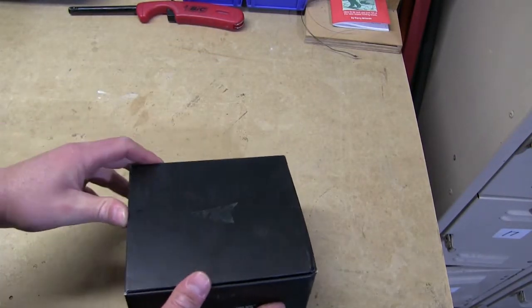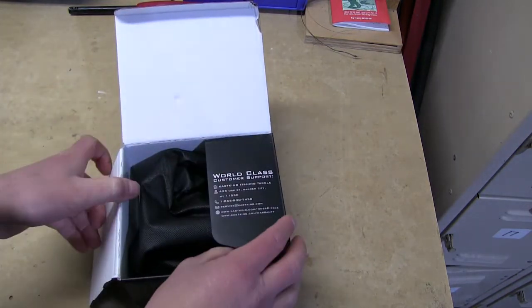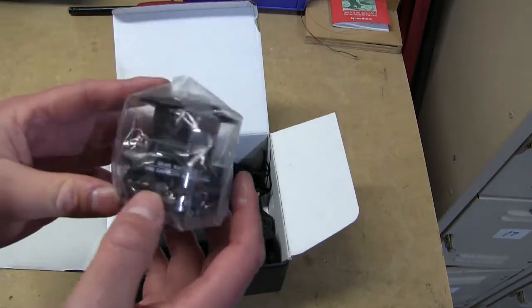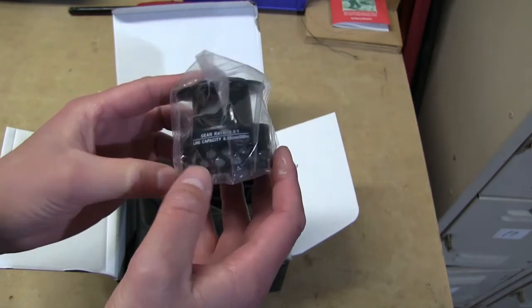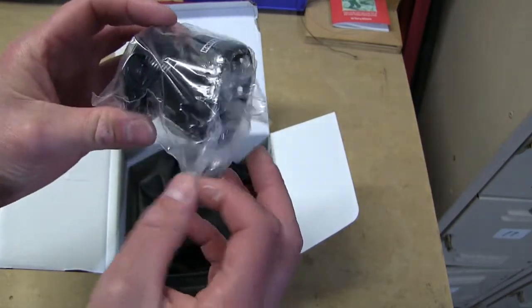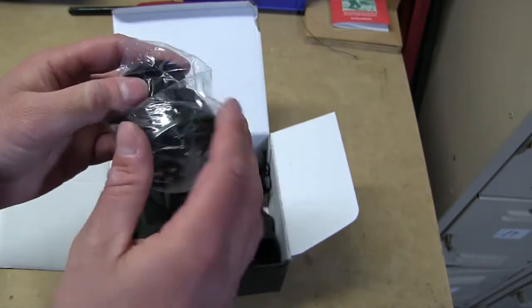It comes in this box and you get an extra spool, which is kind of nice. You can put a different kind of line on it or have a backup if you should need it, so that's really handy.